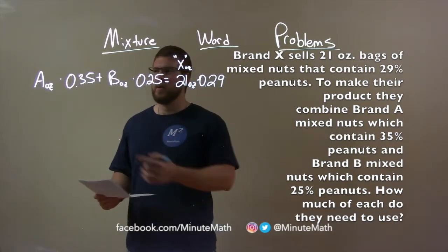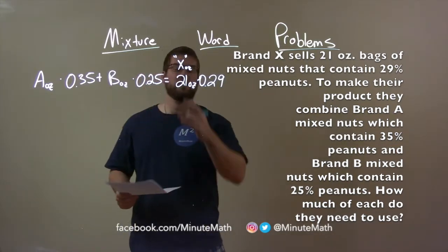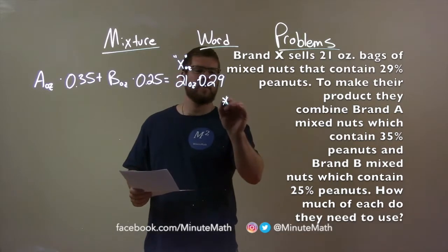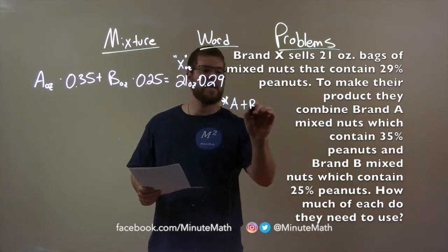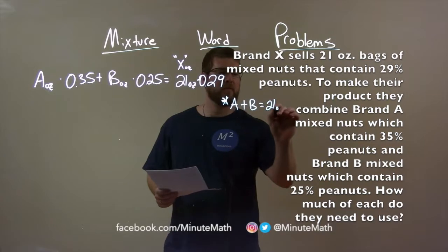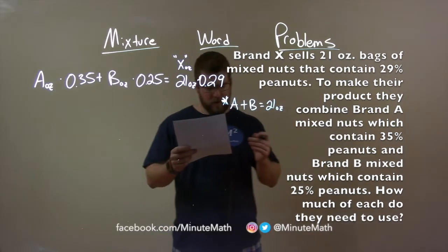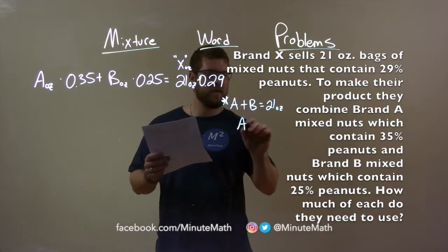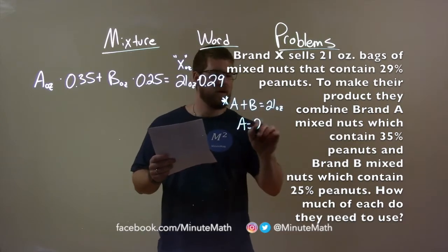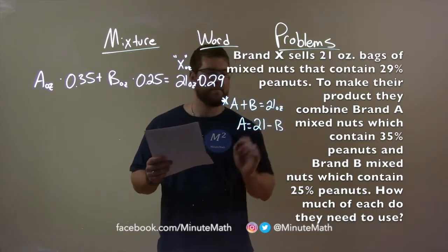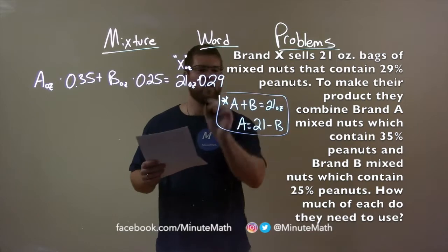Well, this is fairly simple. We know that A plus B ounces is 21. So, a little note here, A plus B is 21 ounces, right? And so, if you want to figure out what, let's say, A ounces is, A is equal, subtract B to both sides, 21 minus B. So, it's kind of good to know that right there.